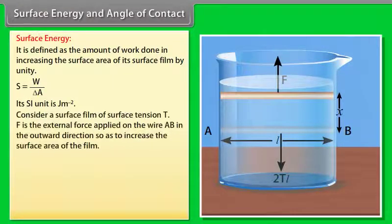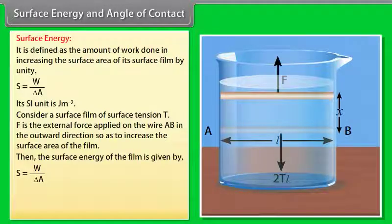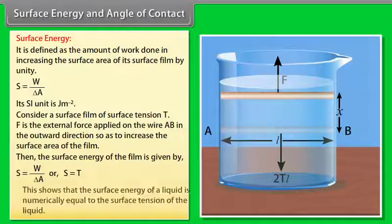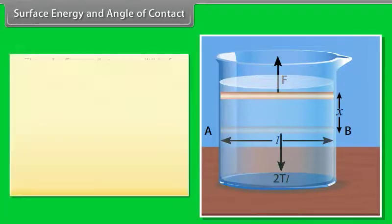Consider a surface film of surface tension T. F is the external force applied on the wire AB in the outward direction so as to increase the surface area of the film. Then the surface energy of the film is given by S equals W/ΔA. This gives the result of S equals T. This shows that the surface energy of a liquid is numerically equal to the surface tension of the liquid.